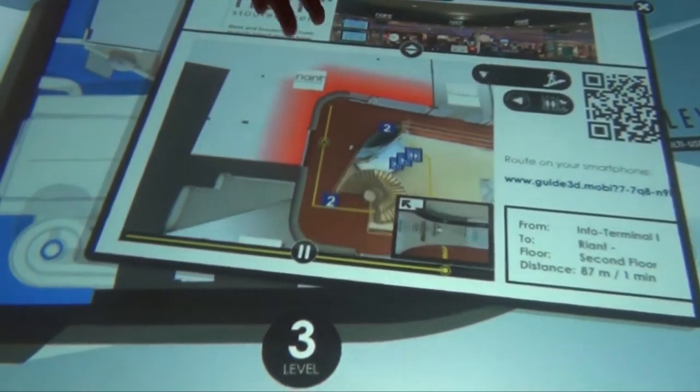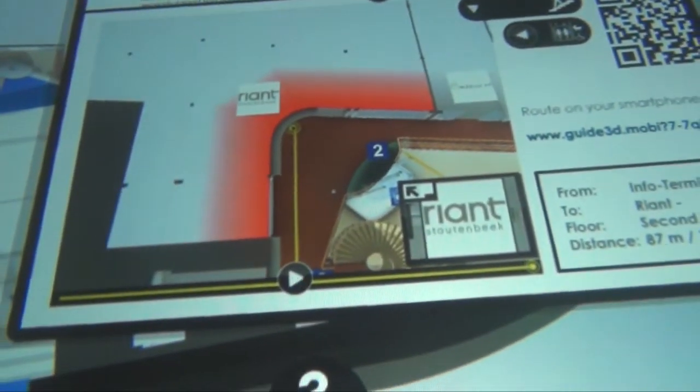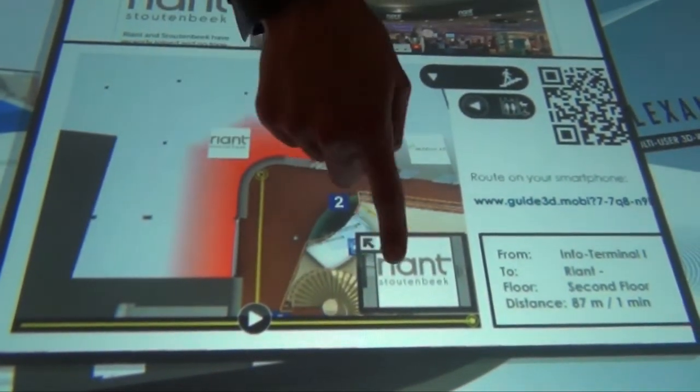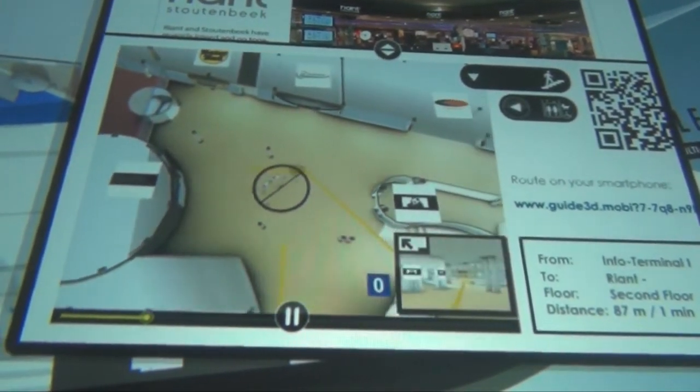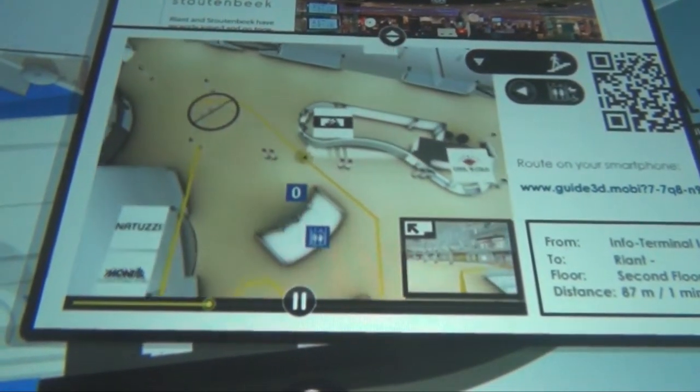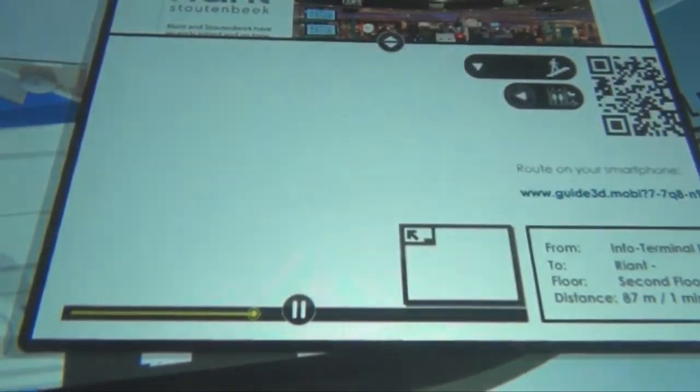The user may choose between two viewpoints. The animation starts by default with the bird's eye view as you can see here. Touching the picture in picture button will switch to the first person view.